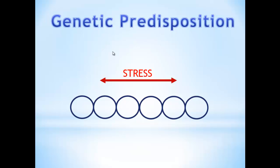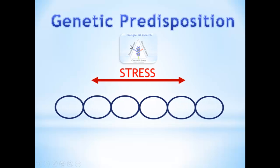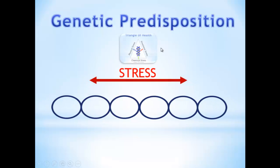When we pull this chain tight we have our three major stressors activated here. They're going to be physical, chemical and emotional stress. You see that triangle of health there?